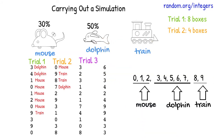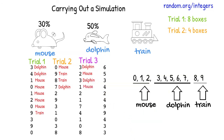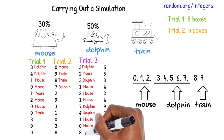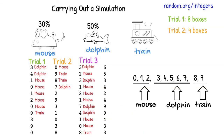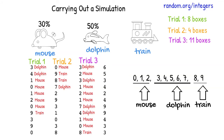For trial three, we first pick a dolphin, then a mouse, then a dolphin, then a mouse, followed by another mouse, another mouse, then a dolphin, another dolphin, a mouse, another mouse, and then finally we get a train so we can stop the trial. It took 11 boxes for us to collect all three toys.